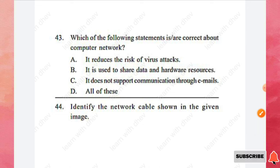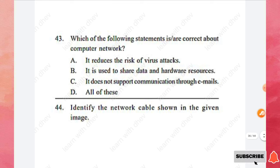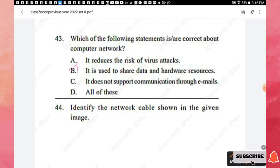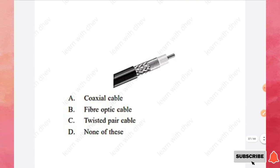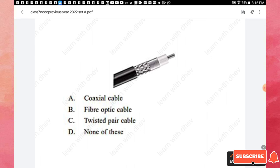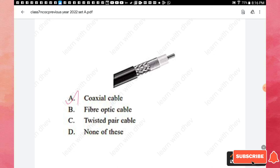Question 43: Which statement is correct about computer networks — it reduces the risk of virus attacks; it is used to share data and hardware resources; it does not support communication through emails; or all of these? The correct statement is option B — it is used to share data and hardware resources. Question 44: Identify the network cable shown in the image. Options are: coaxial cable, fiber optic cable, twisted pair cable, or none. The right answer is option A — coaxial cable.